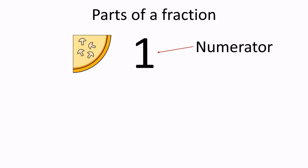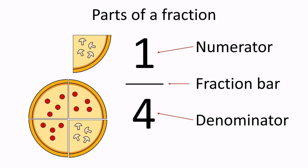There are three parts in a fraction. The top number is called the numerator — it tells us the number of parts we take out of the total. In this example, we have one slice of pizza with mushrooms, so we write one. The horizontal bar is called a fraction bar. It separates the top number from the bottom number and tells us that this is a fraction. Finally, the bottom number is called the denominator. The denominator tells us the total number of equal parts in a whole. A fraction written in this way is called a common fraction.